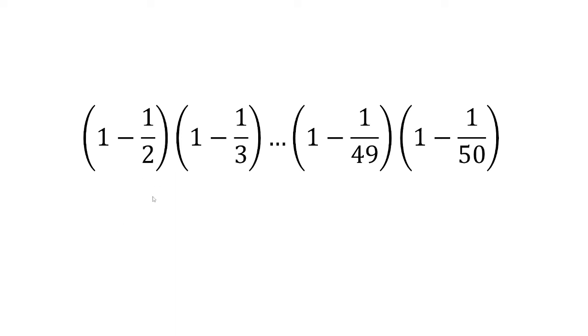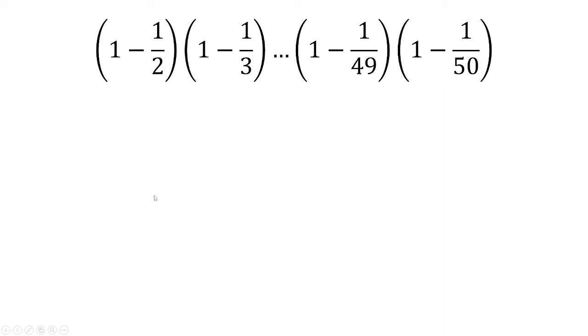In this video, we want to simplify this expression, and we're going to do this in two different ways. The first way, we're going to simplify whatever's inside the parentheses. So we have one-half, two-thirds, all the way up to 49 over 50.